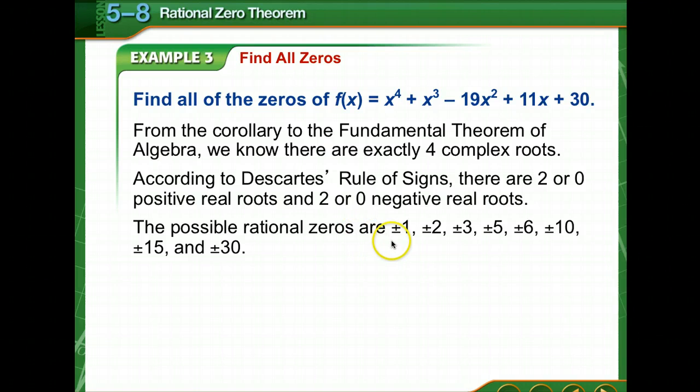The possible rational zeros are plus or minus 1, 2, 3, 5, 6, 10, 15, and 30. They're all factors of 30 since our coefficient is 1.